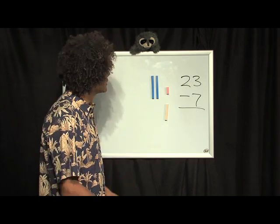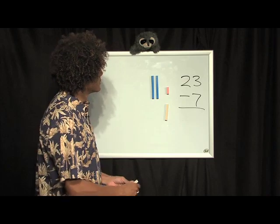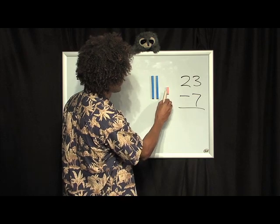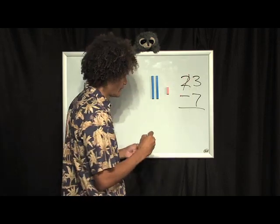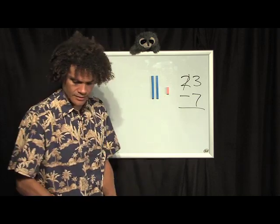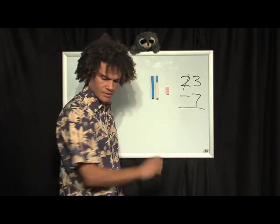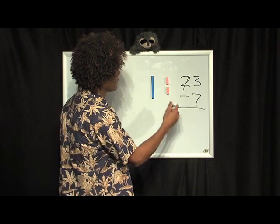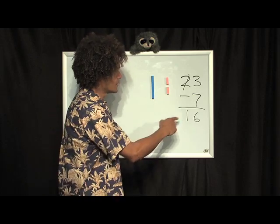A slightly more complex subtraction problem: twenty-three take away seven. All I'm going to do is add, because you'd much rather add small numbers than subtract. Do I have enough? I can't take this seven out of that three. So I take it out of one of these tens. We know that seven wants to be a ten — what does he need? He needs a three. So all I've done is add three and three to get six. I didn't have enough there, so I took seven from one of the tens. Sixteen.